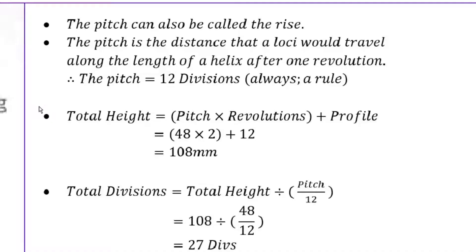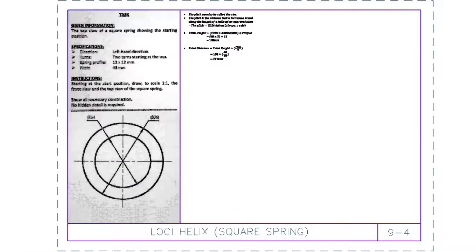To find the total divisions: take the pitch of 48 millimeters, which is effectively one rotation height, and divide by 12 — because one rotation equals 12 divisions. 48 divided by 12 gives you 4. Then divide that 4 into the total height of 108, giving you 27 divisions total. That's 108 divided by 4 equals 27 divisions — a key piece of information without which you cannot do the drawing.